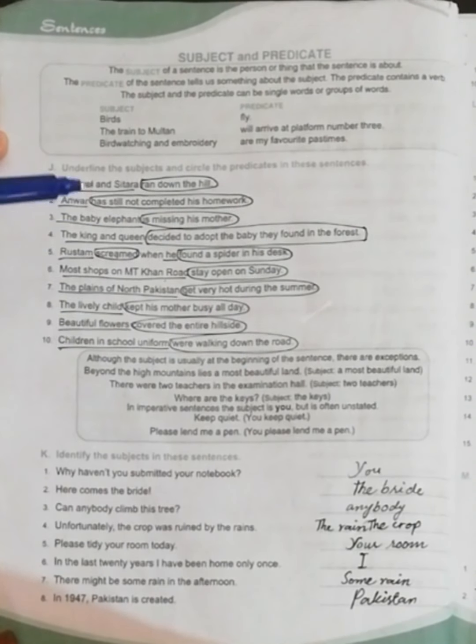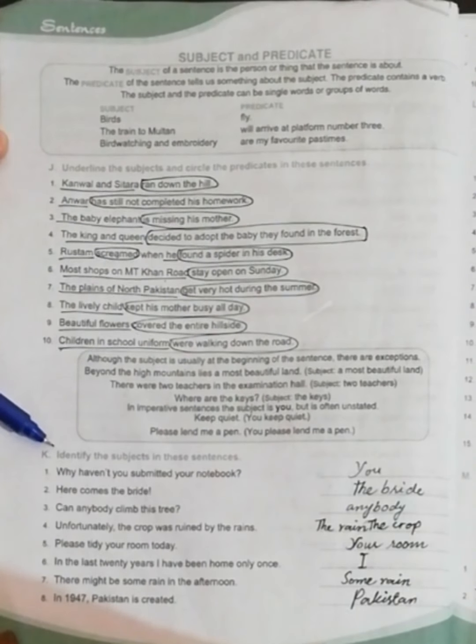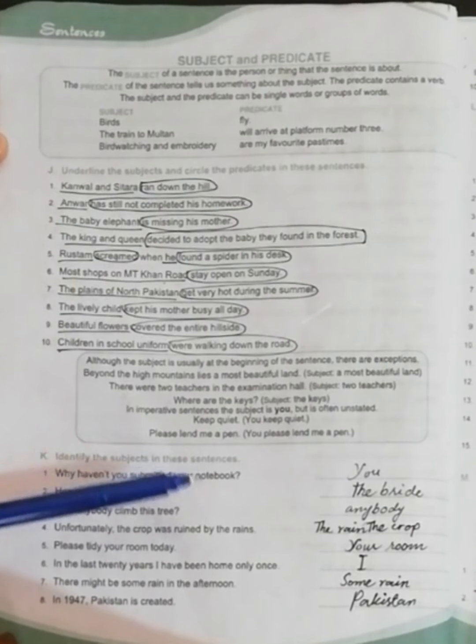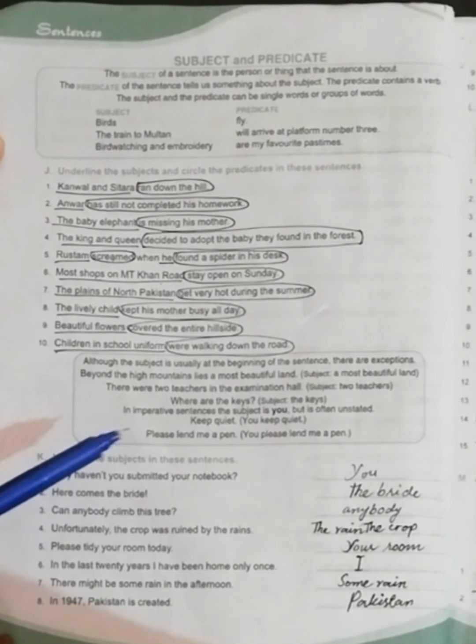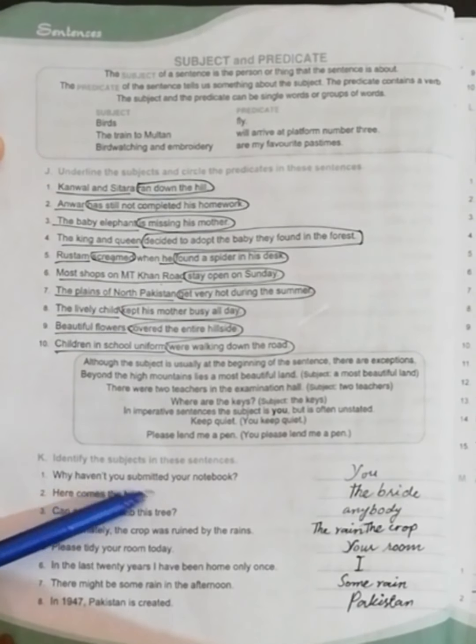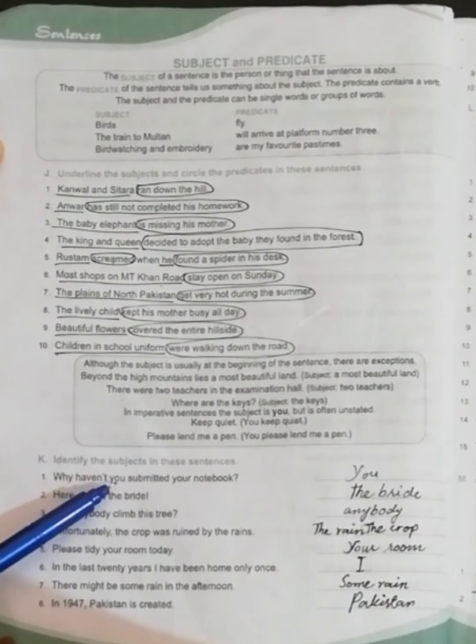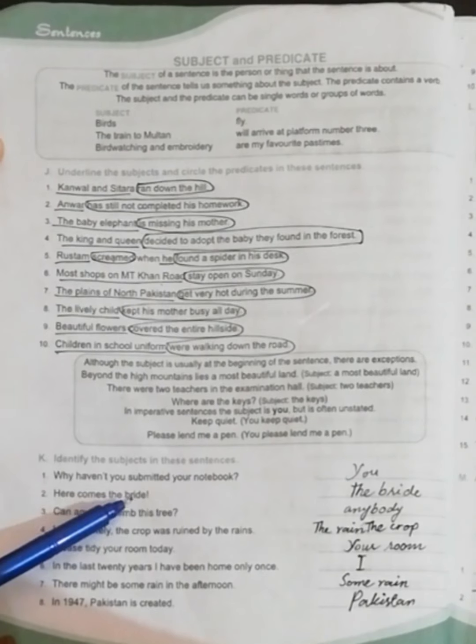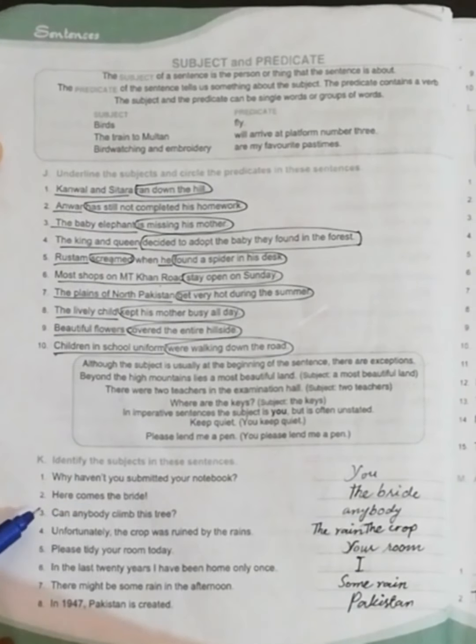So the next question is: identify the subject in these sentences. And after identifying we are going to write the subjects right before the sentence. 'Why haven't you submitted your notebook?' The subject is 'you' here. 'Here comes the bride.' What is the subject? The subject is 'the bride.'